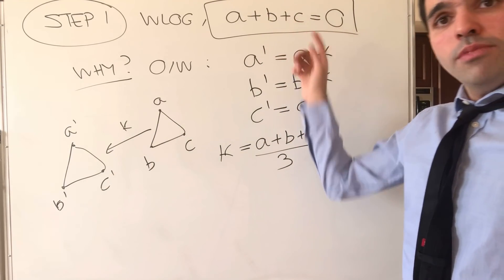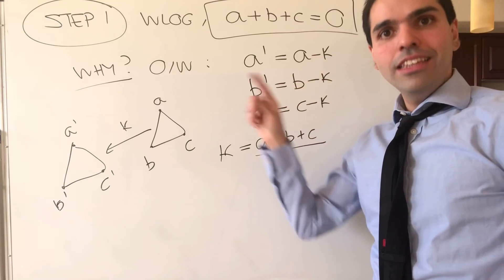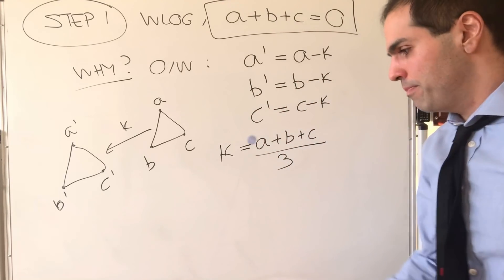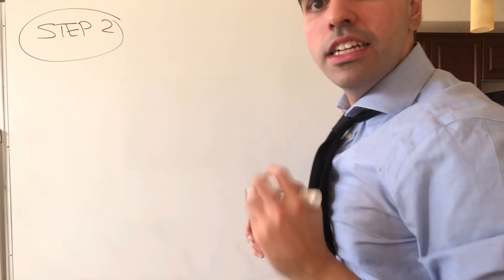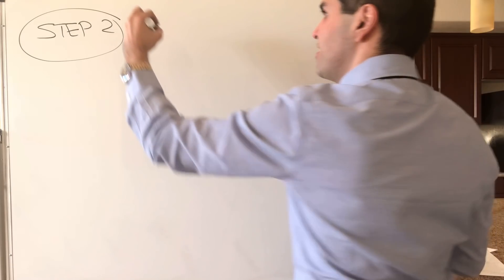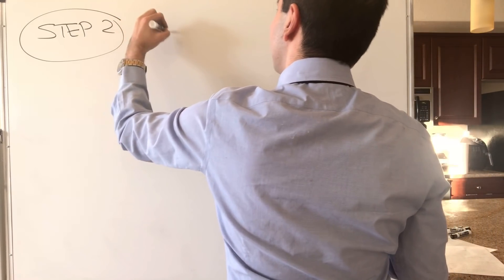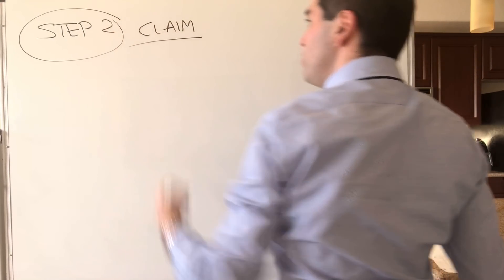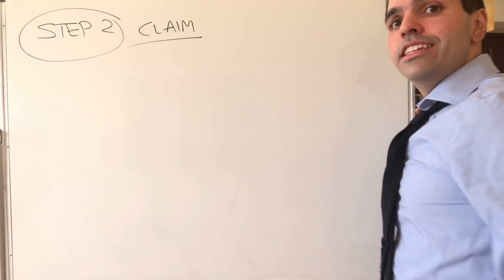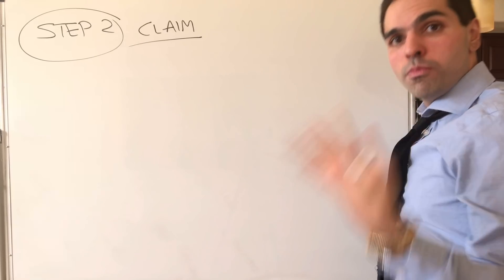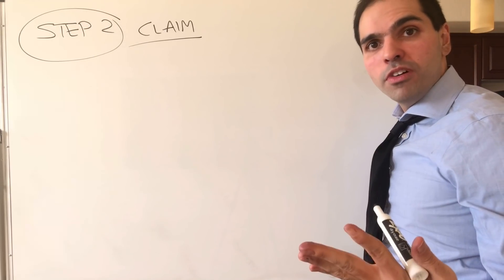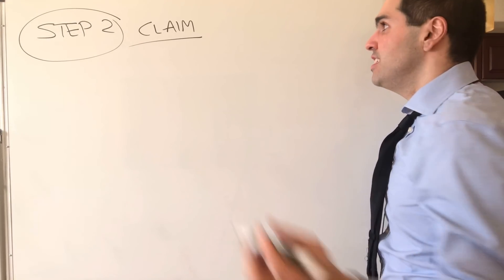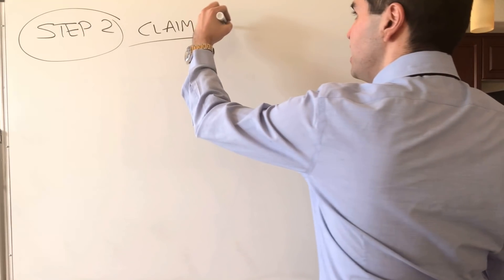So if we prove the result for this translated triangle, it will follow for the original triangle as well. And it seems like a small identity, but it's actually very important for the next step. Because indeed, in this second step, I'm claiming the following: remember the identity A squared plus B squared plus C squared equals AB plus BC plus AC.